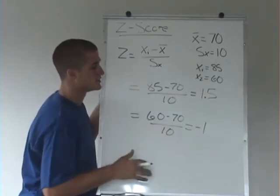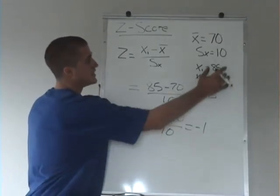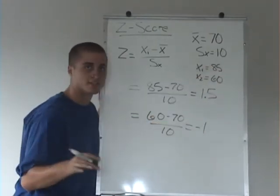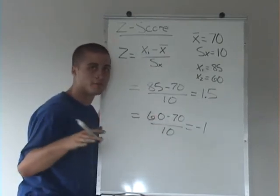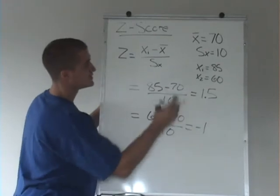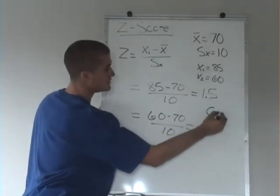So basically what this is, is a way to compare the 60 to the 85 relatively, and see relatively how far you are away from the mean. And obviously if you were right at the mean, a 70 would get a z-score of zero.